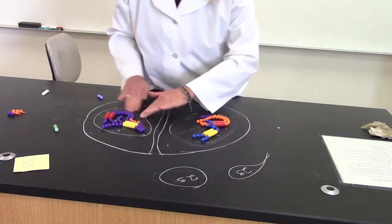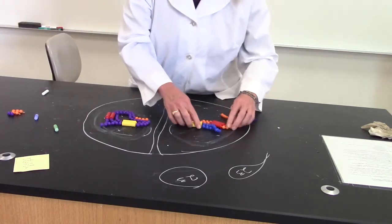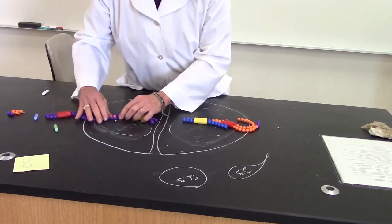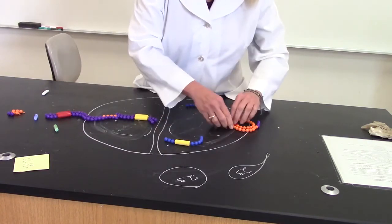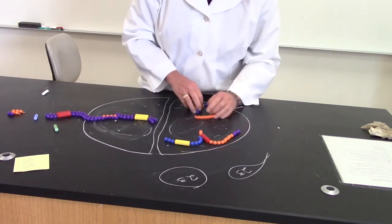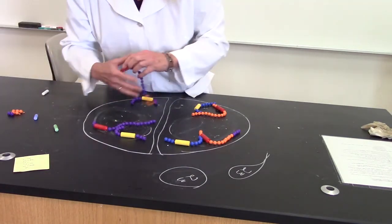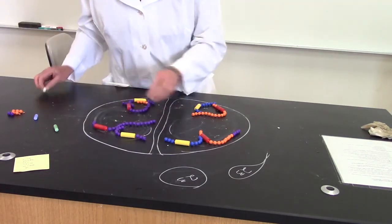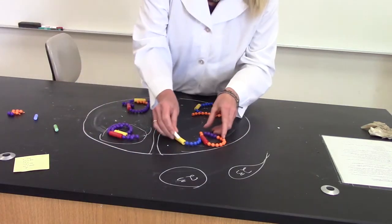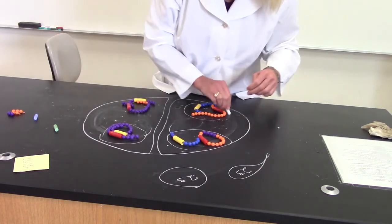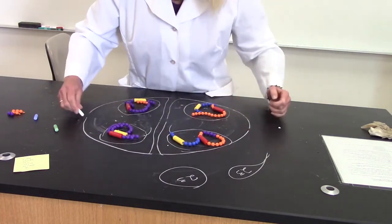Now we've got to get the sisters apart, so this is real similar to mitosis. Prophase 2 - nuclear envelope breaks apart. We've got two cells to work with now. Metaphase 2, and then bye Anna, because the sisters are separating now. Anaphase 2 - bye Anna. They reach the poles, nuclear envelope reforms. Cytokinesis again - this is just like mitosis.